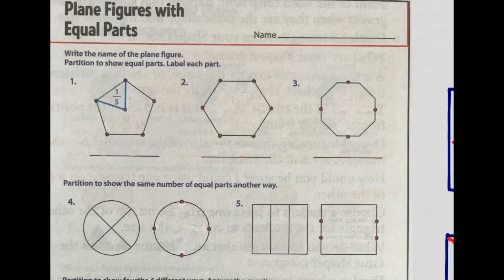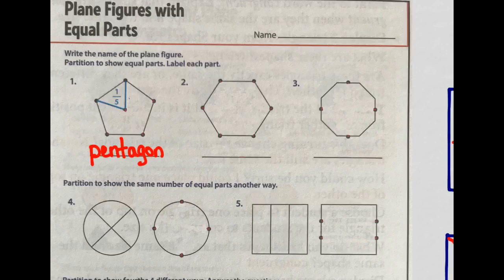Now that you have your workbook page, let's take a look at what we have. I'm going to use my red so you can see it really well. The directions say, write the name of the plane figure, and then partition to show equal parts. Partition just means divide it up. Then label each part. We actually have three steps we need to do. Let's look at the first step. Write the name of the plane figure. What is the name of this figure? How many sides and angles does it have?